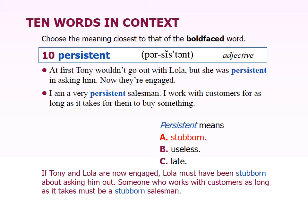On page 51, persistent is number seven: refusing to quit, stubbornly continuing. That captures the meaning of keeping on trying, so that even when you meet failure, you continue to go. In the first example, Lola kept asking Tony even though he said no, and as a result they got engaged. With a salesperson, you definitely have to be persistent, because people's first reaction is often no — you have to hear the no and continue working.